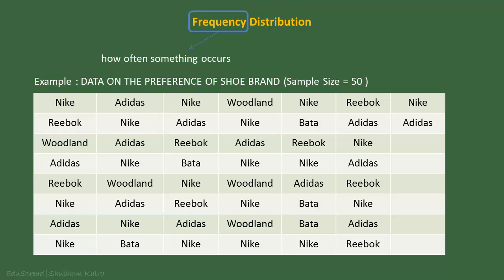And these are the results that I have got. There are 5 brands listed in this table: Nike, Adidas, Reebok, Bata and Woodland. Is this table making much sense to you? It is not. Let's make a frequency distribution for this data.